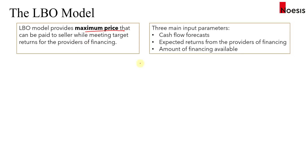The LBO model has three main input parameters: the cash flow forecast, the expected return from the providers of financing, and the amount of financing that's available for the transaction.